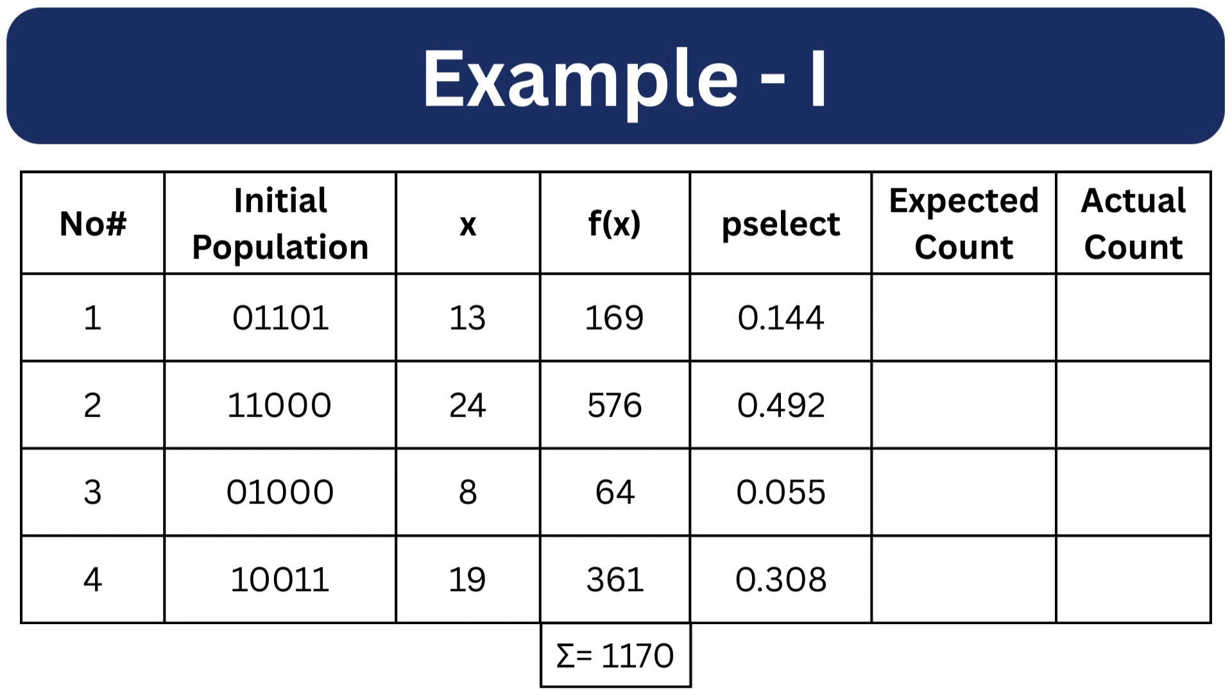So selection probabilities become 0.144, 0.492, 0.055 and 0.308.